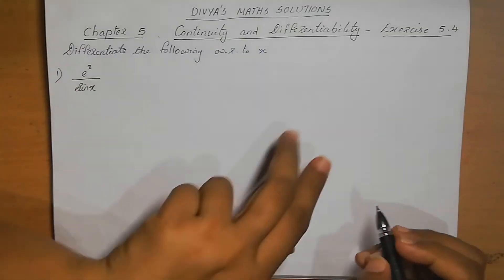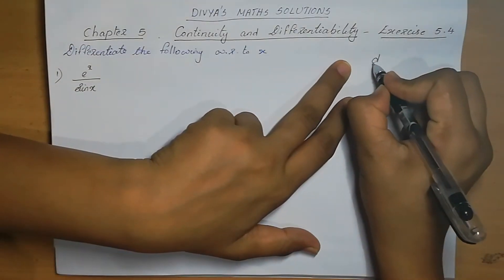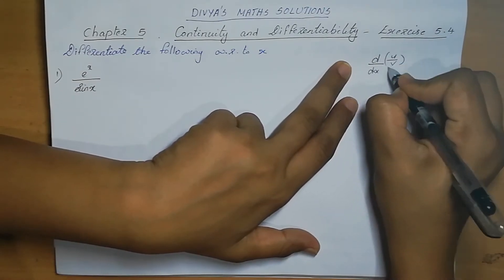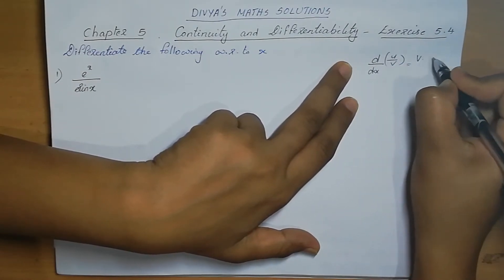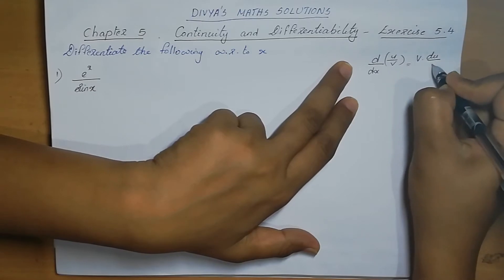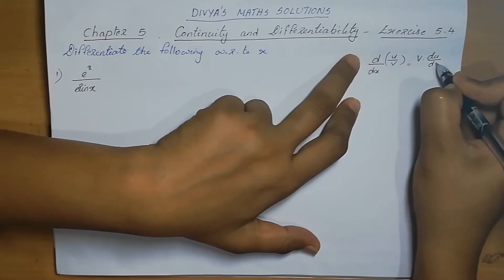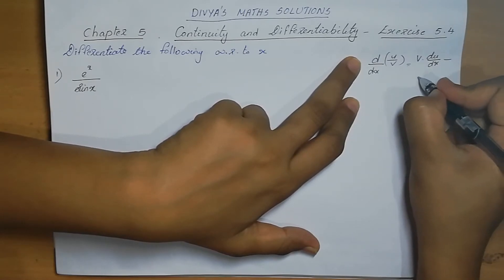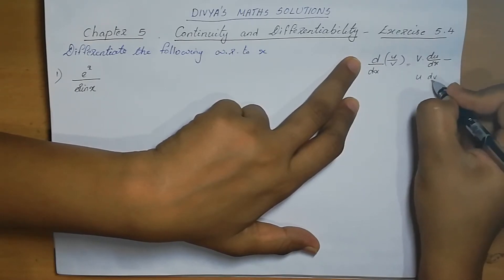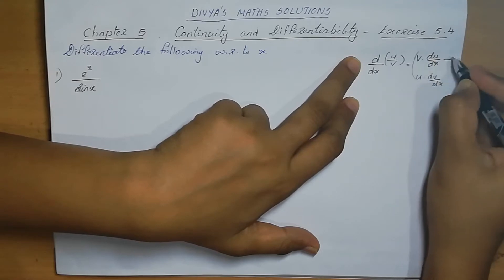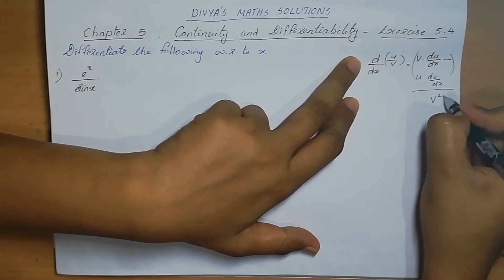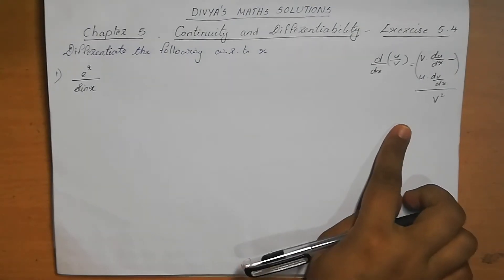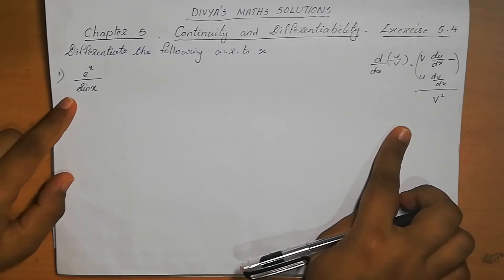This is in the form of division. So how we will do the division form: d/dx of u/v means v into derivative of u, that means v(du/dx) minus u into dv/dx, the whole divided by v squared. So like this only we will do the differentiation if it is in the division form.